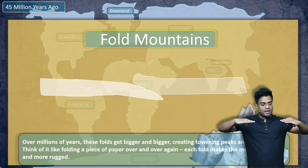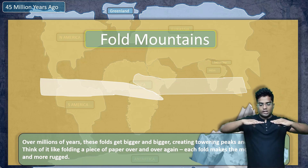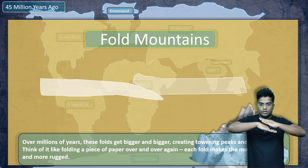So it's something like this — these are the two tectonic plates and this is the denser one. And when they collide, the denser one goes deep inside, while the lighter one goes up.